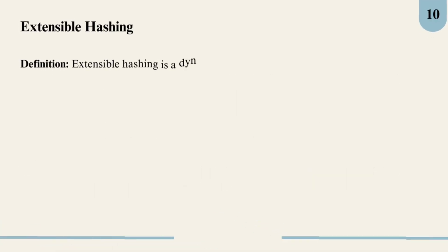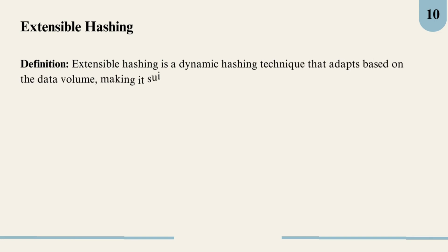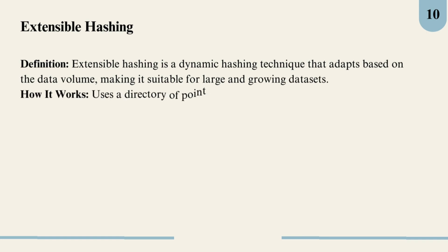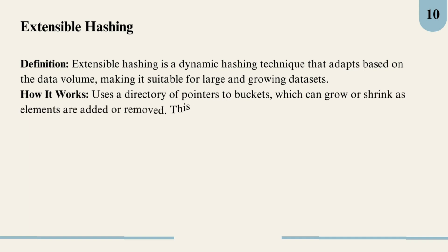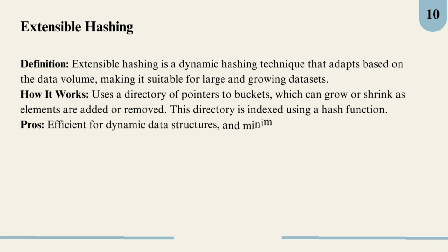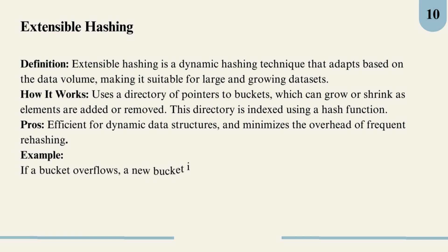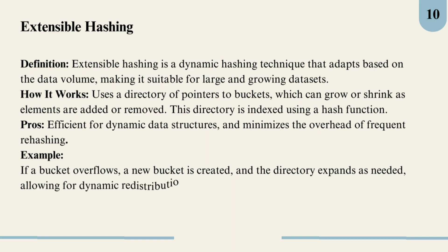Extensible hashing is a dynamic approach perfect for managing very large datasets. Instead of just making the table bigger each time, extensible hashing uses a directory that grows and shrinks based on the data size. It's flexible and can adjust as you add or remove items, keeping the structure efficient and saving memory. For instance, if a bucket overflows, a new bucket is added and the directory expands as needed. It's like a hash table that automatically manages its own growth, ideal when data size varies a lot.